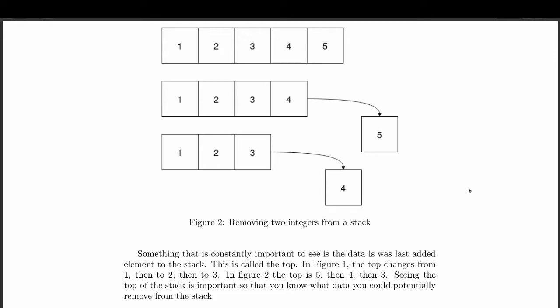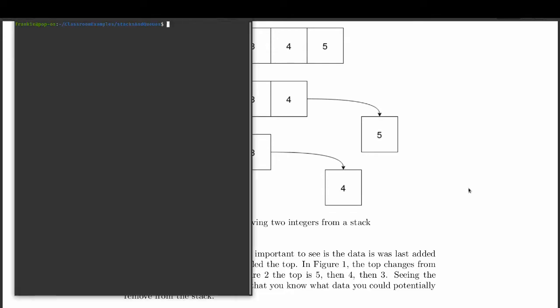Something that's consistently important as you manipulate data in the stack is what's on top. When we need to look at data we're about to remove, it's always important to look at the top, because when we add data we're changing the top, and when we're removing data we're also changing the top. Seeing the top of the stack is important so you know what data you have just added and what you have just removed.